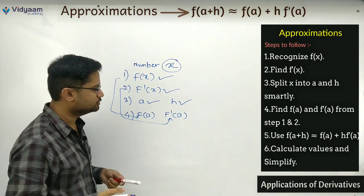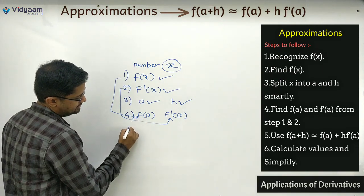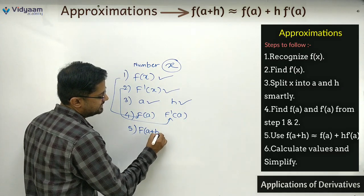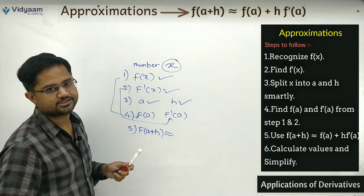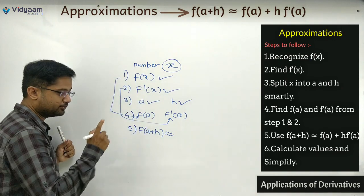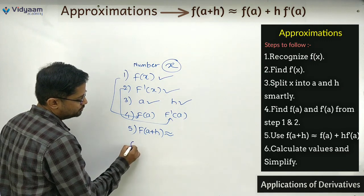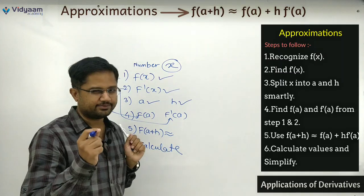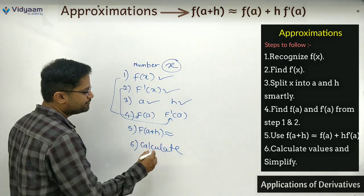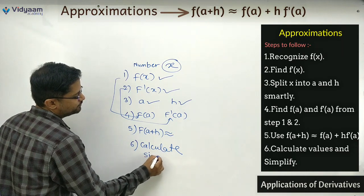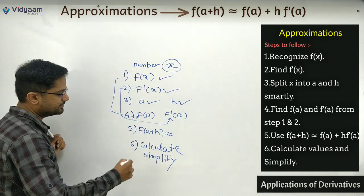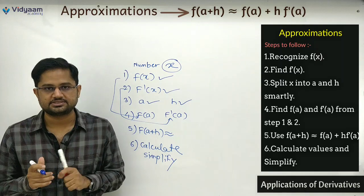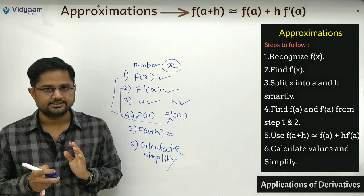With f(x), we have completed the requirements. Now in step number 5, you have to use the standard formula: f(a + h) ≈ f(a) + h·f'(a), which is visible on the board above. After that, calculate the values, then simplify everything. So from step 1 to step 6, the basic steps have already been covered.